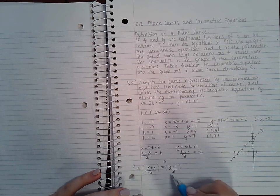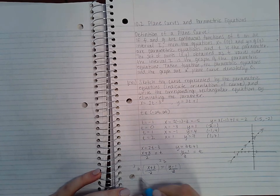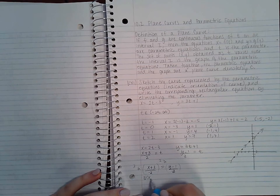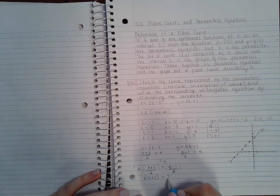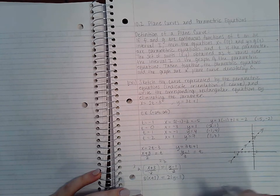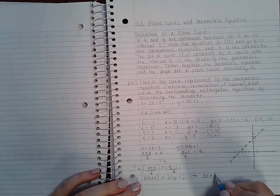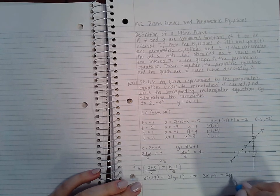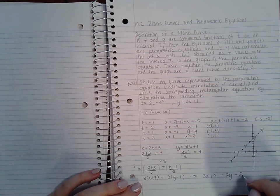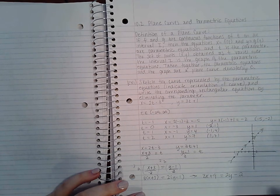these are going to reduce, so I'm going to get 3(x + 3) = 2(y - 1), which will give me 3x + 9 = 2y - 2. And normally when we're given linear equations, we